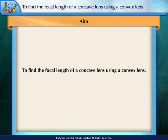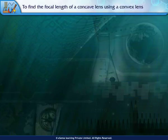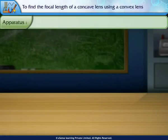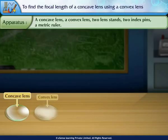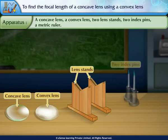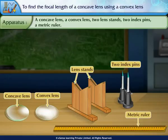Aim: To find the focal length of a concave lens using a convex lens. Apparatus: a concave lens, a convex lens, two lens stands, two index pins, and a metric ruler.